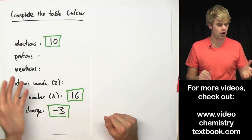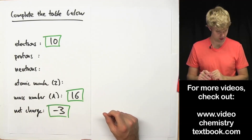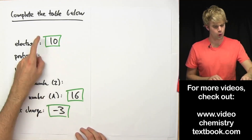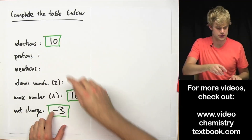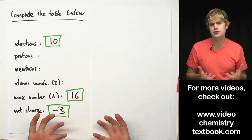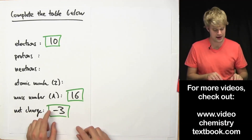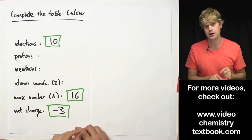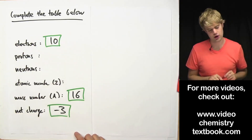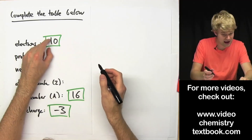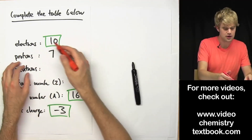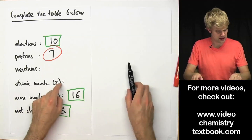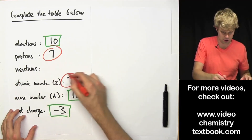Here's a table with various characteristics of a certain atom. We need to fill in the things that are empty. We don't know how many protons, we don't know how many neutrons. We know the electrons and we know the net charge. So based on the number of electrons and the net charge this atom has, we can figure out how many protons there are. Since this is a net charge of minus 3, that means there are 3 more electrons than protons because electrons have a negative charge. So if I have 10 electrons, that means I'm going to have 7 protons. Now I know that my atomic number is the same as my number of protons, so that is also going to be 7.